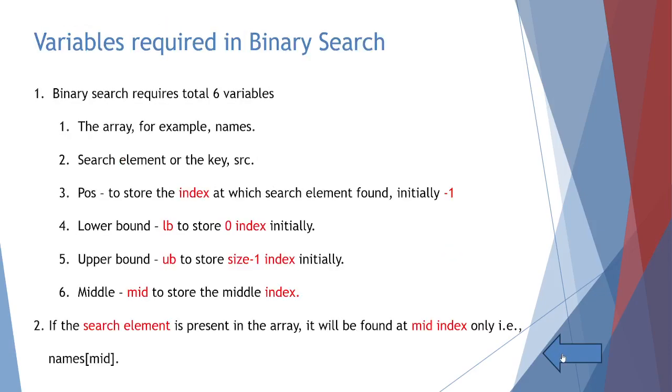Now in binary search, we have six variables. The array, for example, names array, string array, search element SRC, that is also string, position to store the index at which search element is found. Initially, it is minus one. Lower bound, LB to store zero index, upper bound, UB to store size minus one index initially and mid element to store the middle index. If at all the search element is present in the array, it will be found at mid index only, that is names of mid.